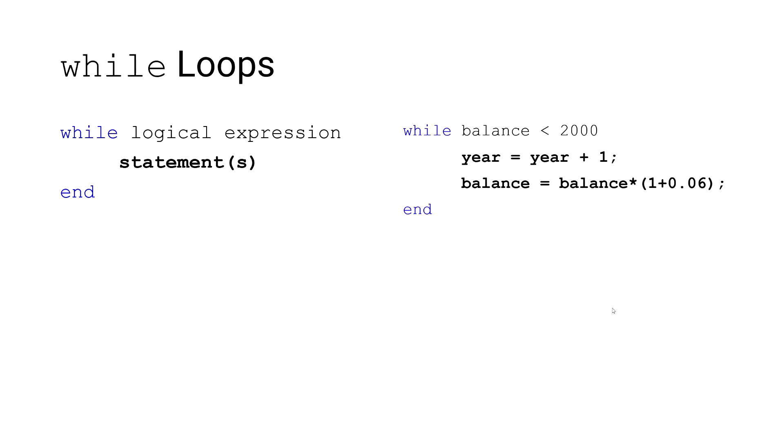The first statement advances the year by one. The second statement shows the increase in the account balance accounting for that 6% rate of return.